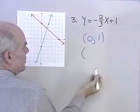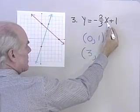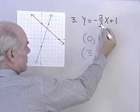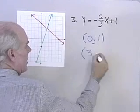Let's let x be equal to, how about 3. And I chose 3 because 2 thirds times 3 is going to be a whole number. So 2 thirds times 3 will be 2. So I have a negative 2 plus 1, which is negative 1.